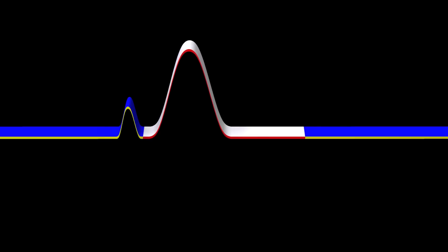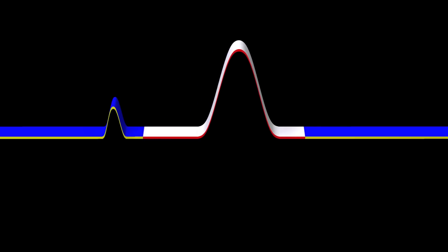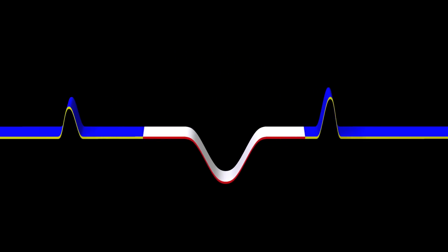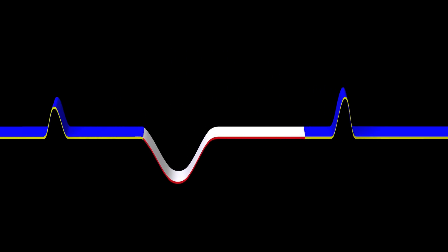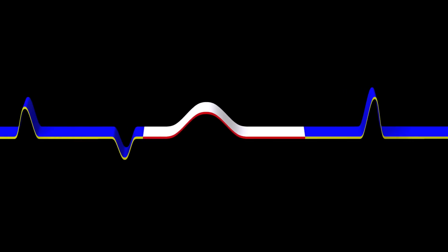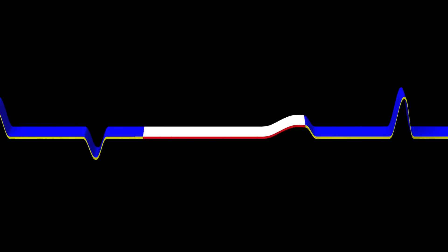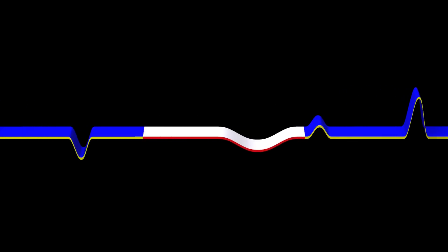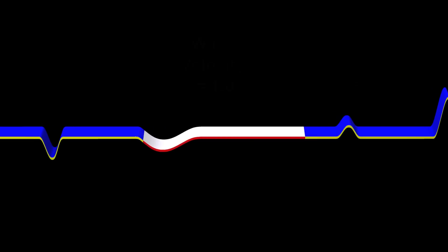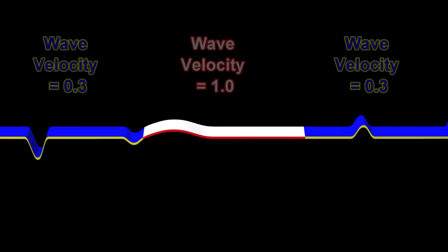For the first several scenarios, the velocity inside the blue material is still slower than the velocity in the middle material. In these cases, notice how the wave inside the middle material is flipped upside down each time it reflects.